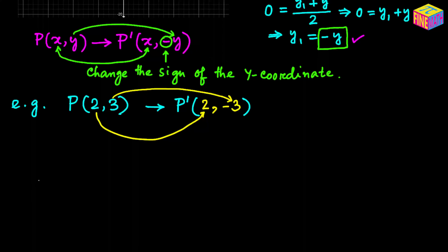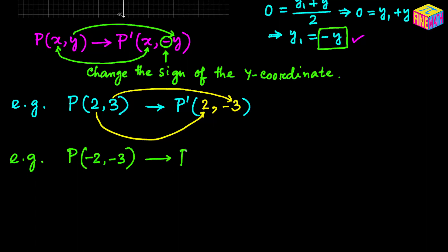Example 2: Suppose the original point has coordinates (−2, −3). The image will have the same x coordinate, −2, and the y coordinate flips sign from −3 to positive 3. So the coordinates of the image when reflected on the x-axis are (−2, 3).